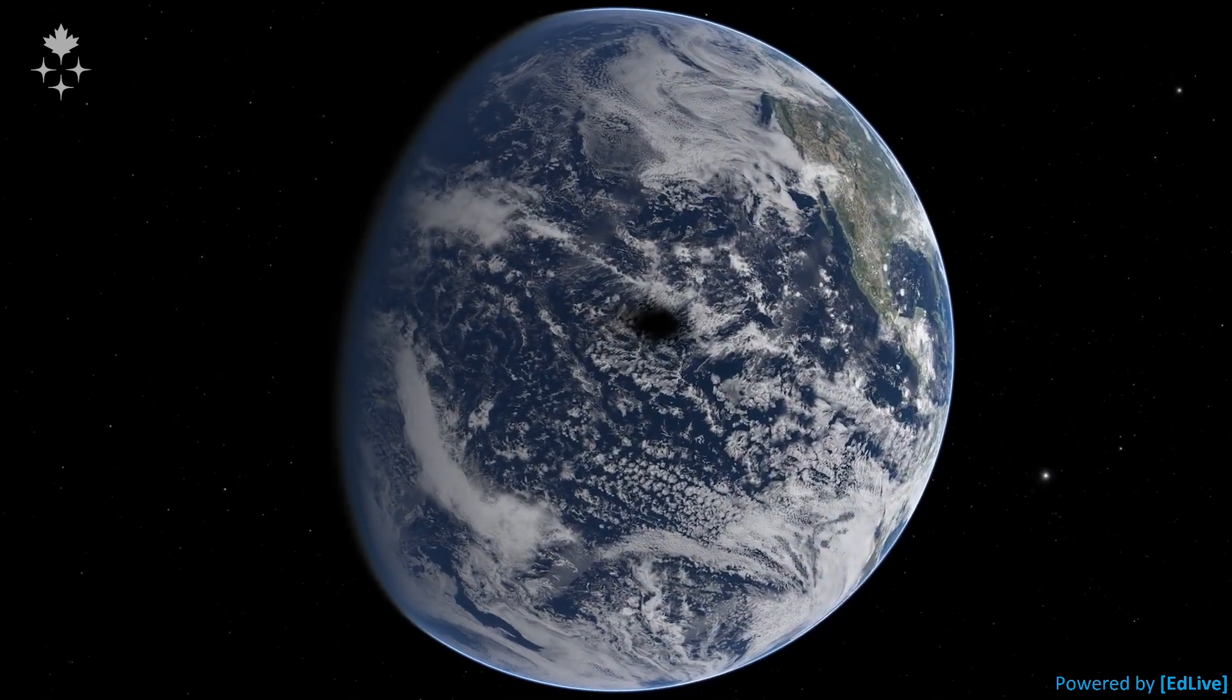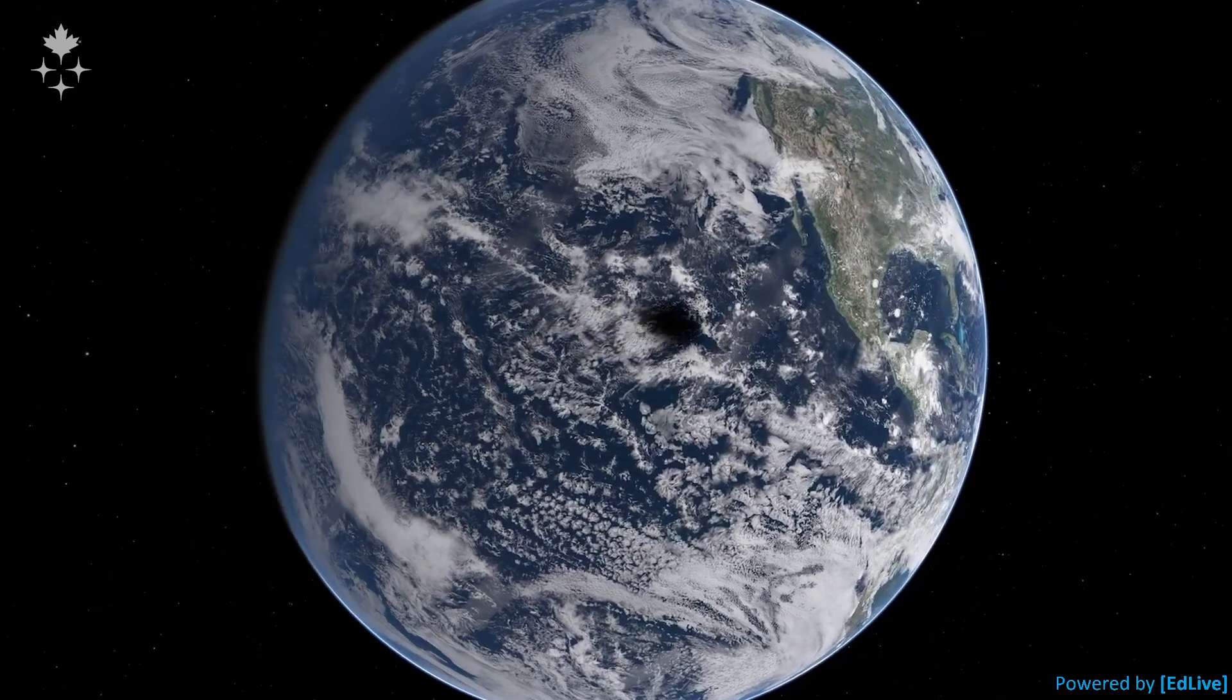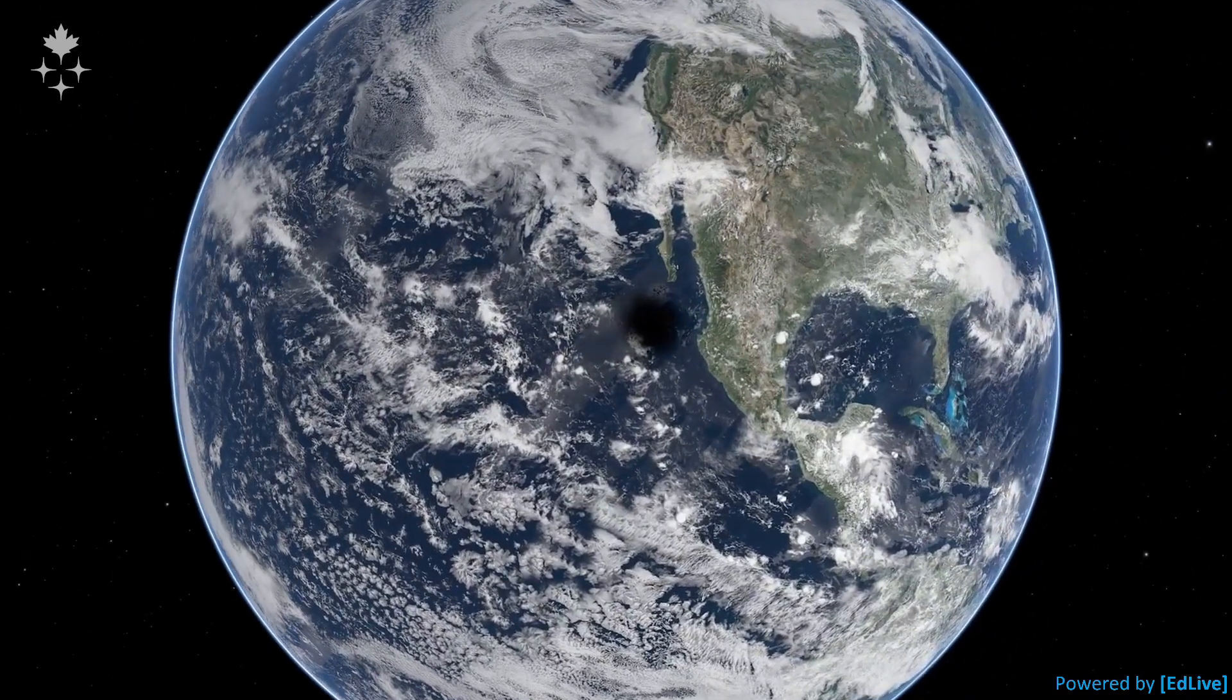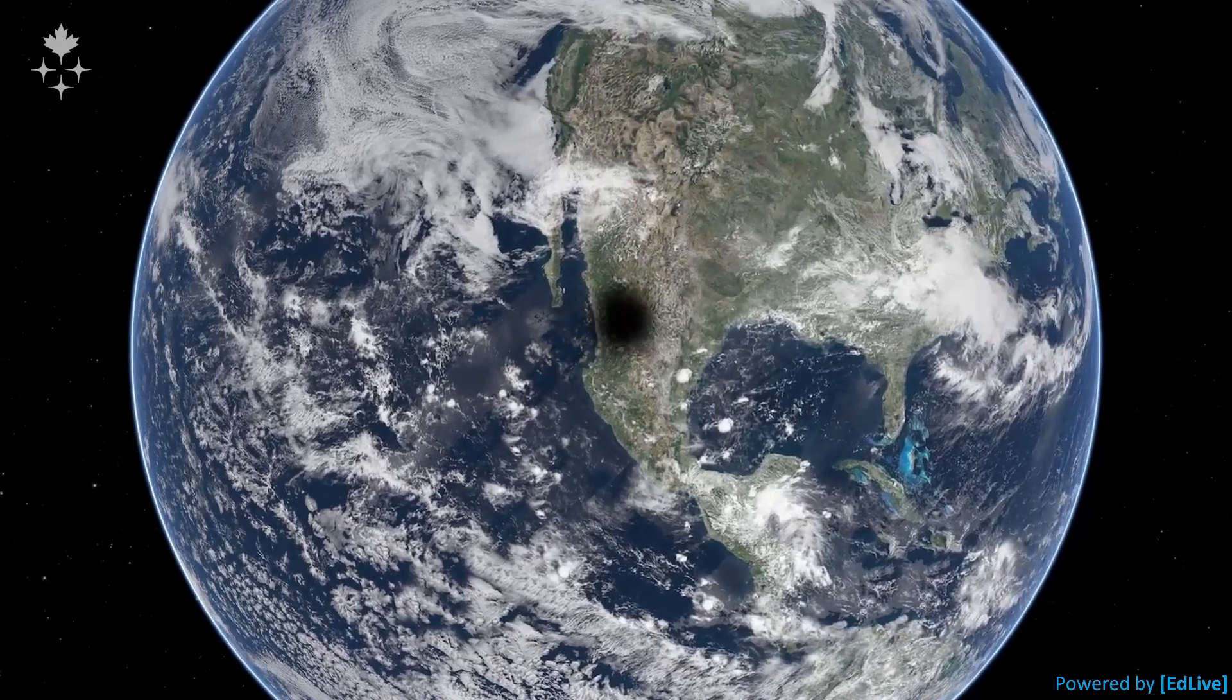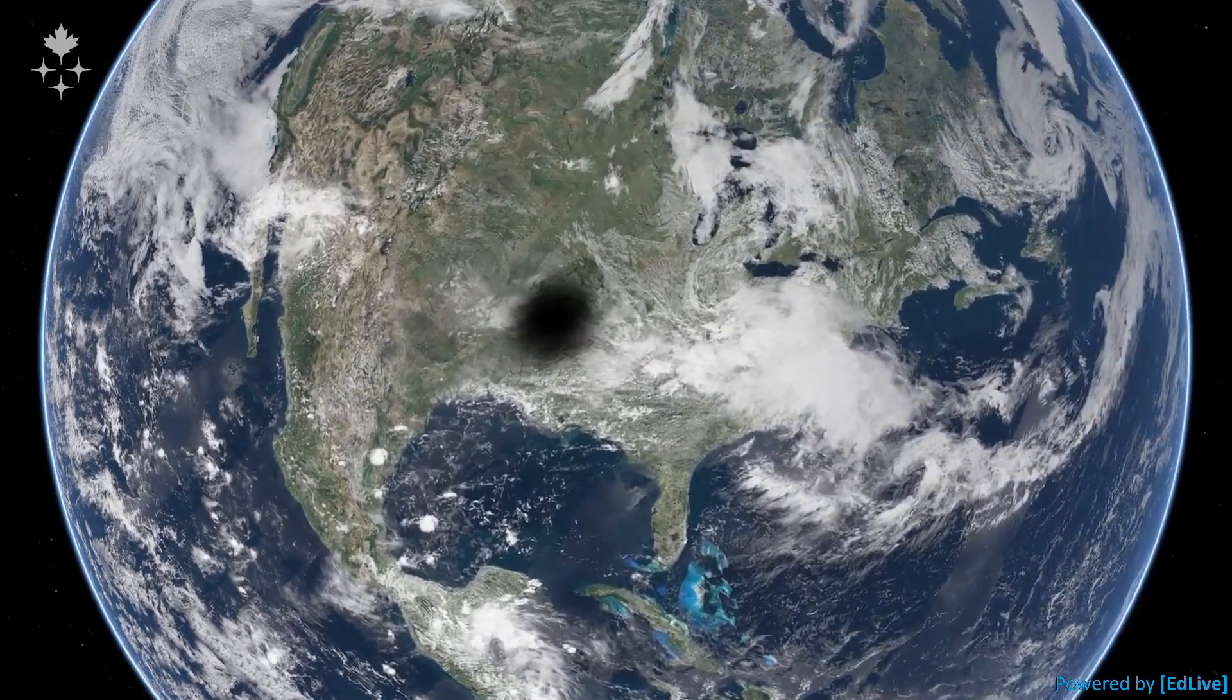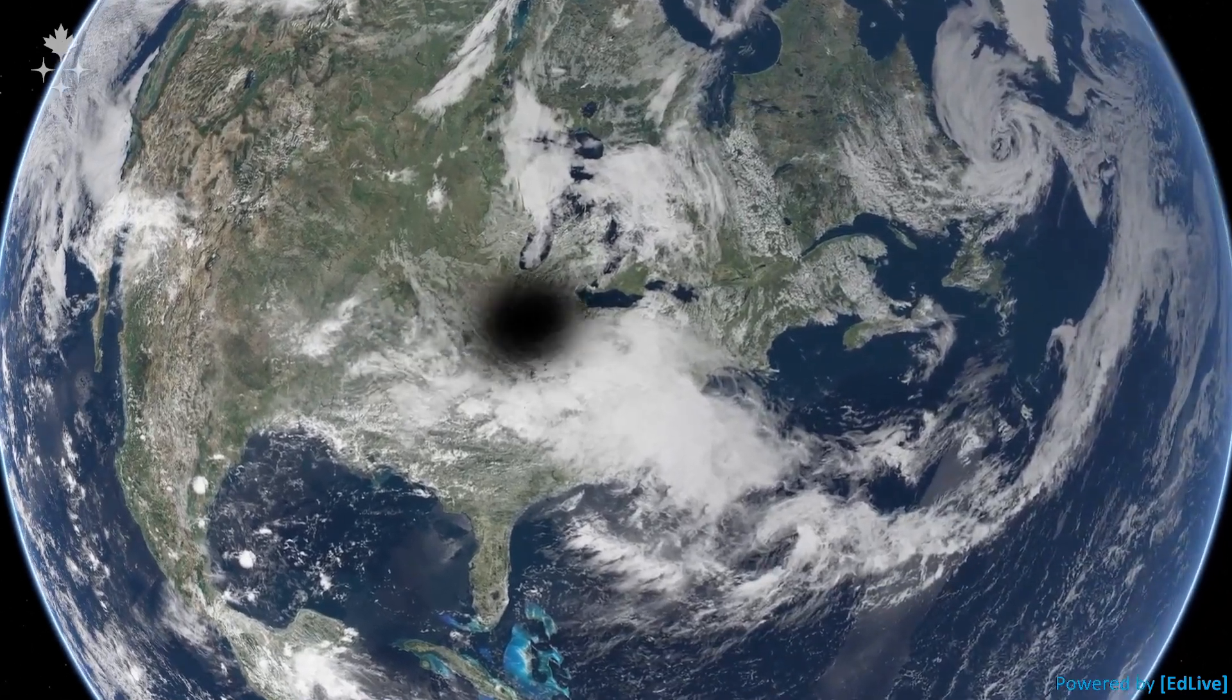Since everything moves, the shadow of the Moon will move across the surface of the Earth. During the eclipse next April, it will cross Mexico, the United States, and it will finish its course across eastern Canada.